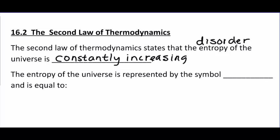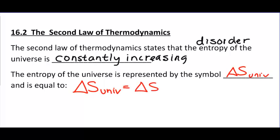We have a symbol for the entropy of the universe: delta S_univ, which stands for entropy of the universe. Delta S of the universe equals the delta S of the system plus the delta S of the surroundings.